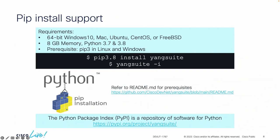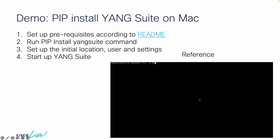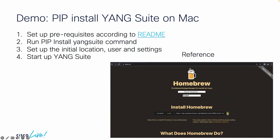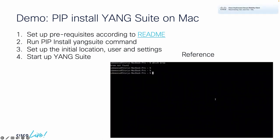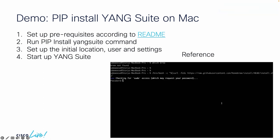Moving on to the next feature — when Yang Suite was first released, we had a Docker container as the way to use and access it, and that's still possible today. Now you also have the opportunity to use pip install to get Yang Suite tooling on your device. You can check out the GitHub readme for all the prerequisites. At a high level, you go through the prerequisites for your particular device and then simply run pip install yangsuite — it's that simple.